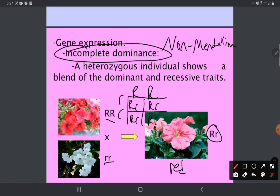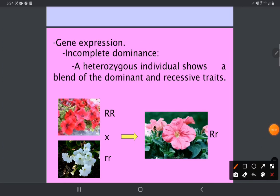This time we get an intermediate, and that is because the dominant gene here does not completely mask the recessive. It is partial.